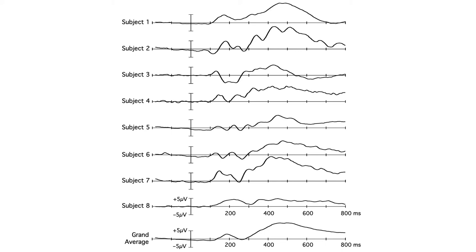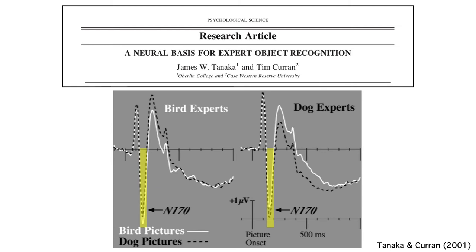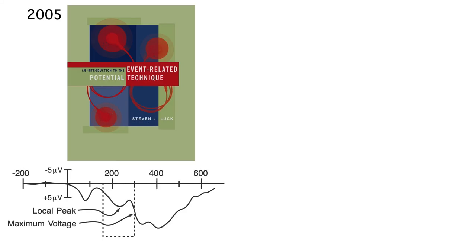However, the statistical analysis is done using the single-subject waveforms, not the grand averages. For example, this study measured the mean amplitude in the N170 time range for each individual subject's average ERP waveform in each condition, and then put the single-subject amplitude values into a simple analysis of variance.